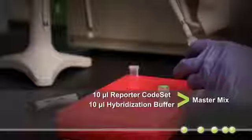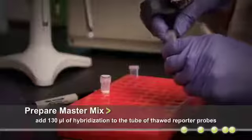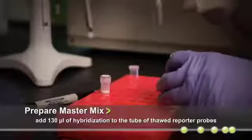However, we will use a master mix of reporter probes and hybridization buffer to eliminate pipetting variabilities. To set up this master mix, add 130 microliters of hybridization buffer to the thawed tube of reporter probes.